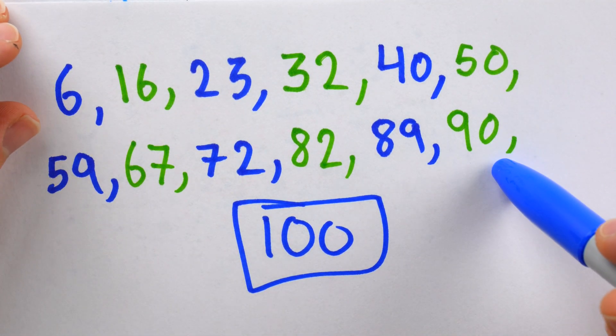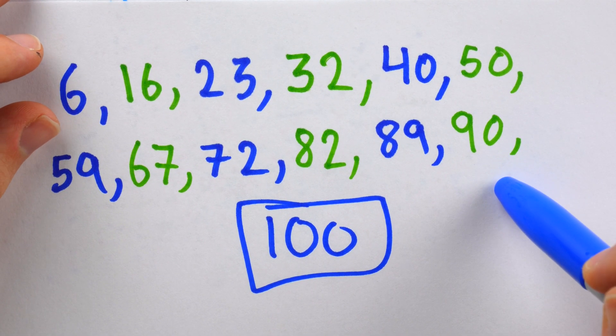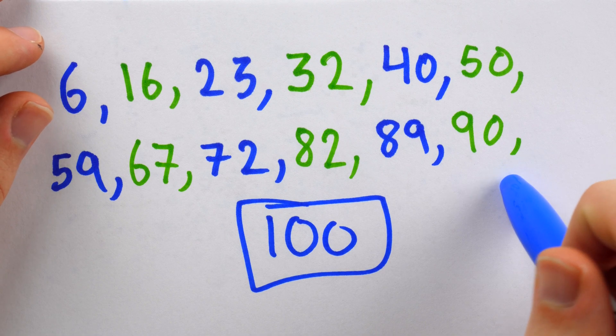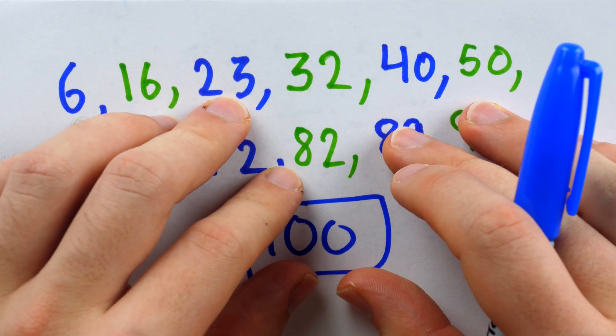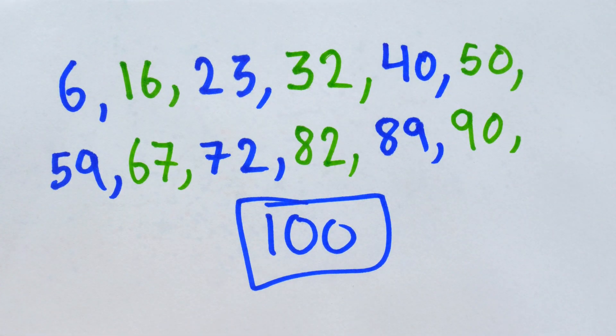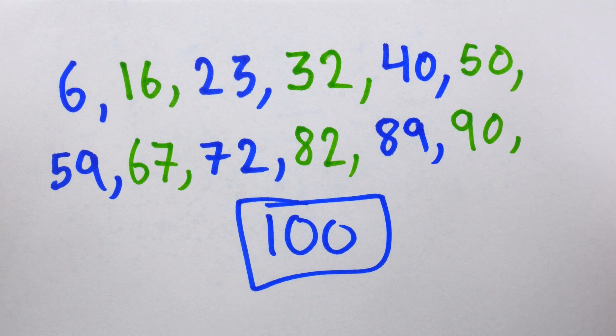One of the things you quickly learn in analyzing combinatorial games is that it's often best to start at the end of a theoretical game and try to work backwards to figure out what the optimal strategy is.